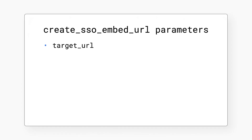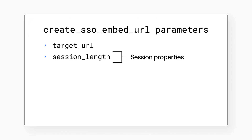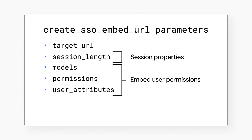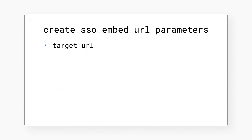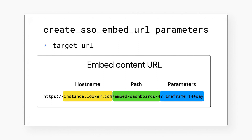There is the target URL parameter, session property parameters like session length, embed user permissions parameters like models, permissions, and user attributes, and the external user ID parameter. The target URL parameter is the same URL as the Embed Content URL mentioned in our previous video on private embedding. This points your iframe to the Looker content you want to embed with the right settings applied, like dashboard filters.